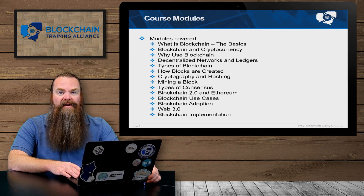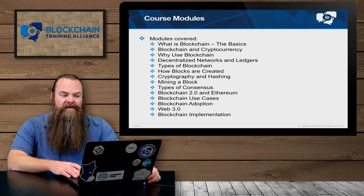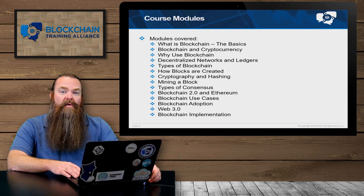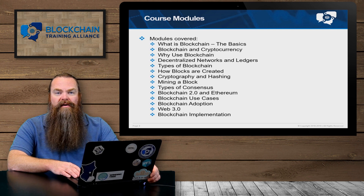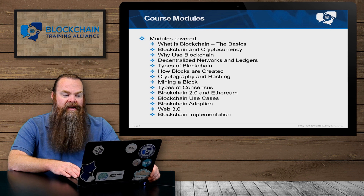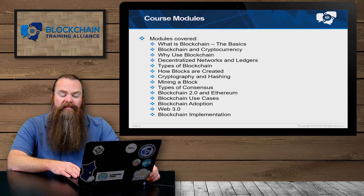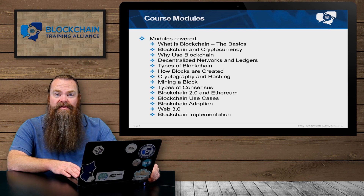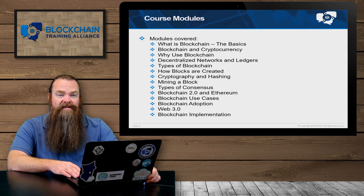We're going to cover a number of different modules and topics throughout this class. You can see them all listed here. We'll start off by talking about the basics of blockchain. We'll talk about how cryptocurrency fits into all of this. We'll talk about why you might want to choose to use blockchain and what some of the right circumstances for blockchain are. We'll talk about decentralized networks and the ledgers that they keep. Then we'll talk about the different types of blockchains, how blocks get created and managed on a blockchain, which is going to involve cryptography and cryptographic hashing. We'll also talk about the process of mining a block and the various types of consensus involved in doing so.